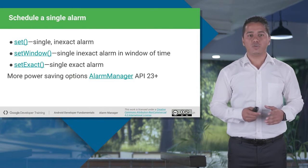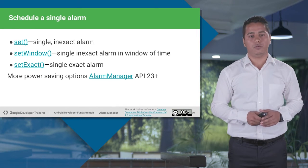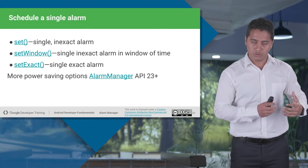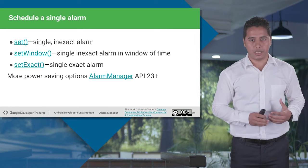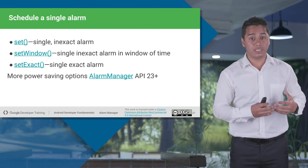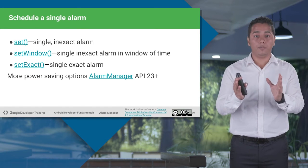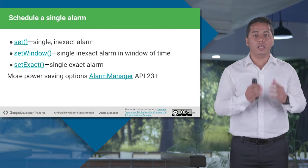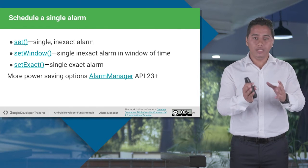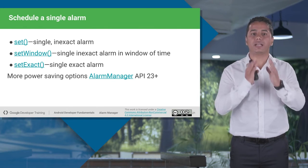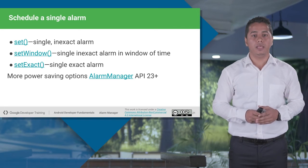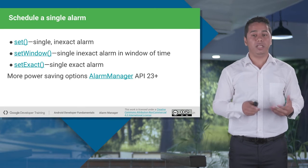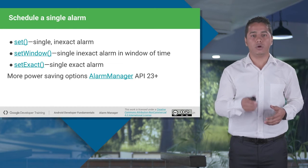There are three ways of scheduling a single alarm. First, set — you schedule a single alarm at an inexact time. Then setWindow — you schedule a single alarm but there is a window; maybe you want to trigger the alarm between 15 to 20 minutes. setExact will again schedule a single alarm but at a specified exact time. There are more power-saving options in alarm manager which have been included in API 23.